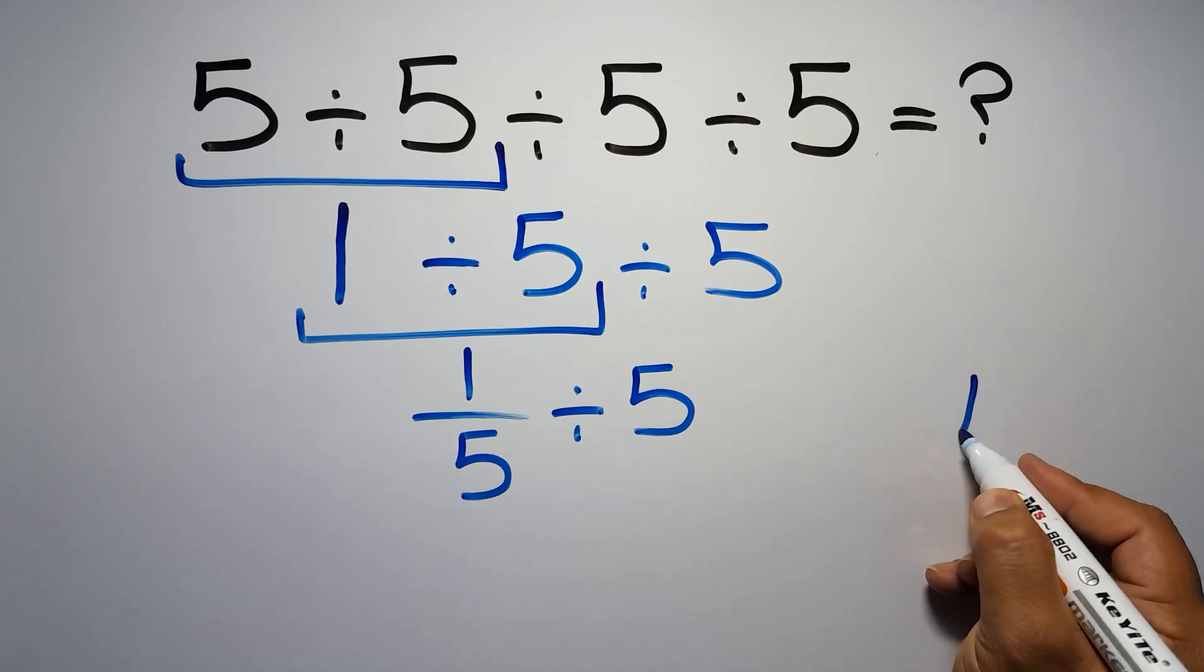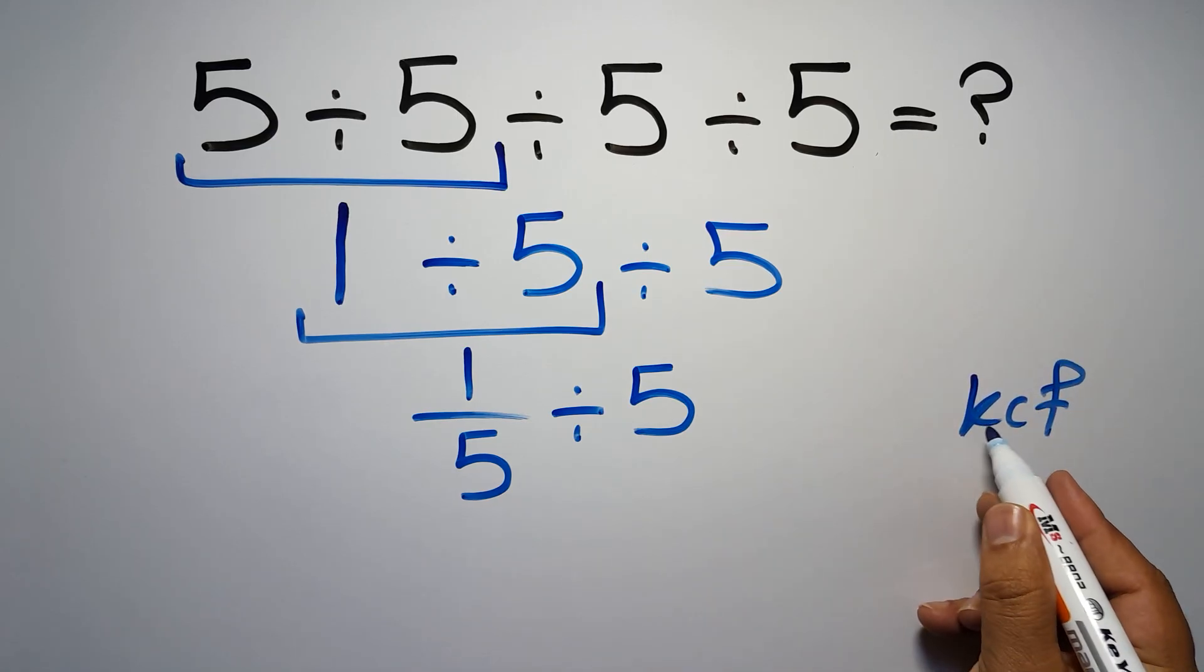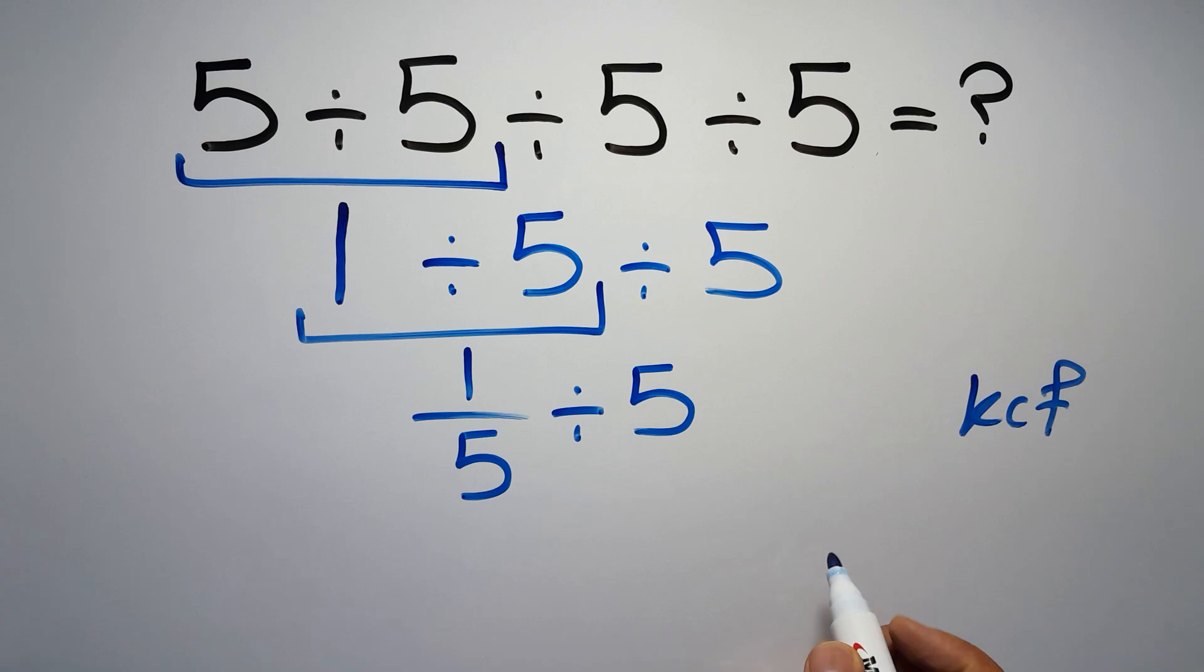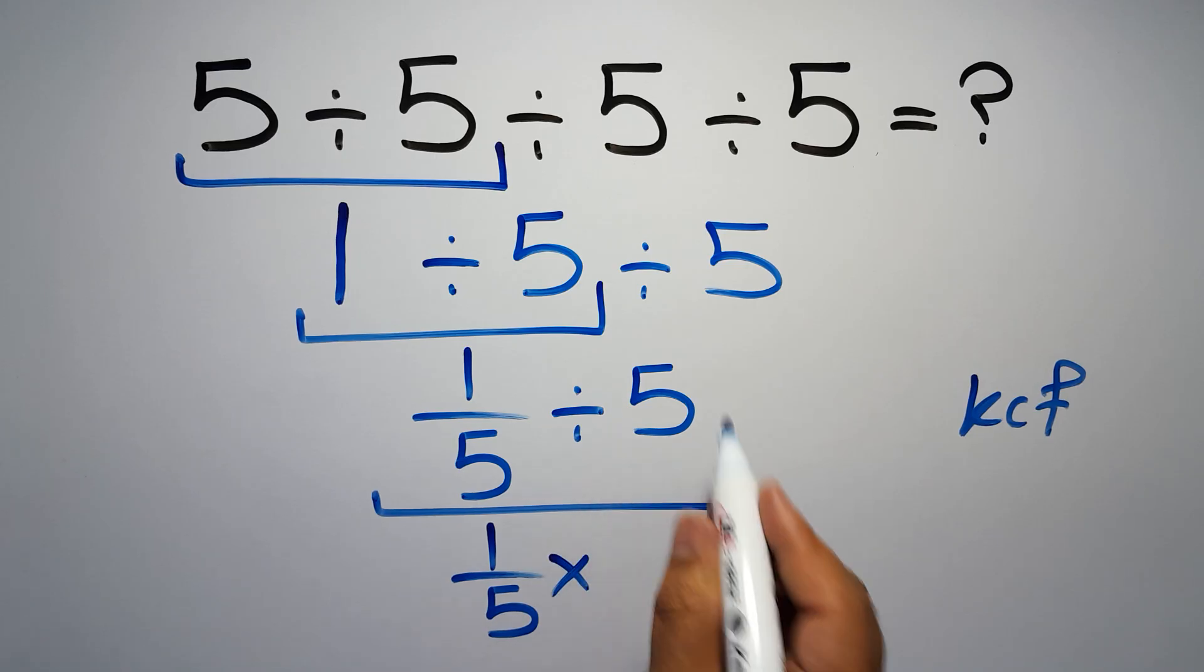Now according to the KCF rule, K stands for keep, C stands for change, and F stands for flip. We can write keep the first fraction, change division to multiplication, and flip the second fraction.